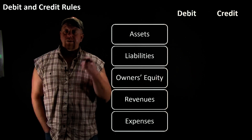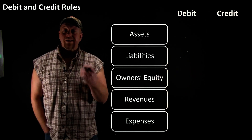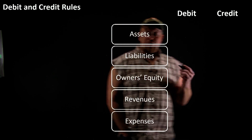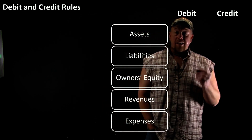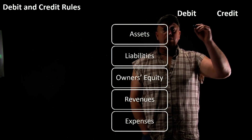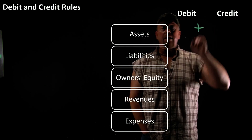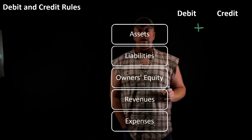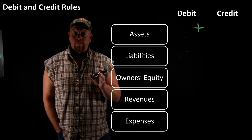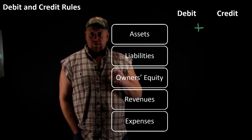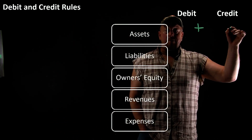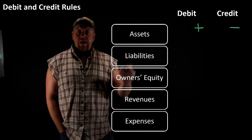All you got to do is remember what happens with them bucks. So if your bank account — them bucks going up — you just make a little debit entry to that account. Debit entry to bucks makes it go up. And of course, if debit makes it go up, then credit is going to make it go down.